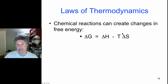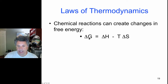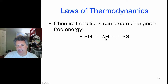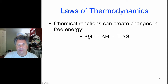If T delta S is greater than delta H, then delta G is negative. Whereas if T delta S is less than delta H, then delta G is positive. What does that mean in terms of whether reactions proceed or not?